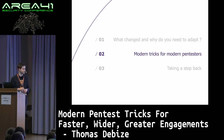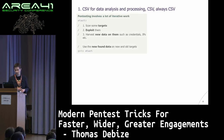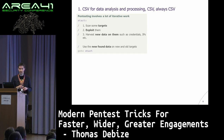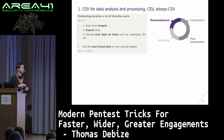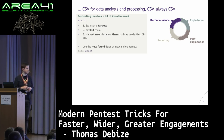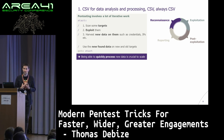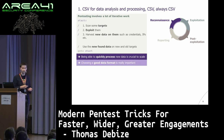The first point to scale is to use a proper data format. Pen testing involves a lot of iterative work. You scan some stuff, you exploit, you harvest some new data and you apply it on new and old data — that's the wheel. Our job is an advancing wheel, that's why you need to process a lot of data every time during multiple phases of an engagement, and you need a really good data format.